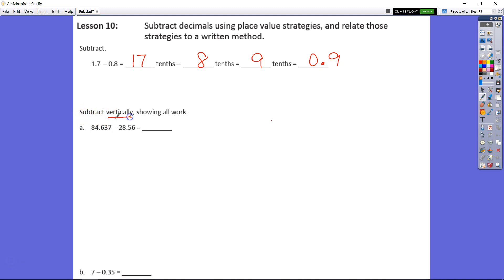Now it says subtract vertically which is our standard algorithm and it wants us to show all of the work. So let's just rewrite this number here.